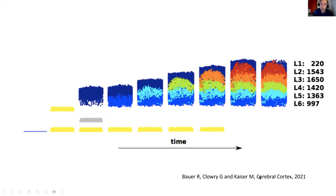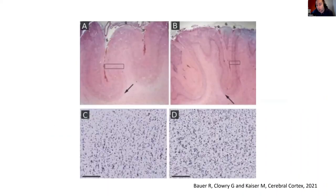In a study published two years ago, we looked into cortical development and created a computational agent-based model. We modeled each individual cell and how it behaves during cortical development, and we could reproduce realistic cell numbers in different cortical layers. From a biomedical point of view, we could also reproduce certain characteristics observed in polymicrogyria — a neurodevelopmental disease where the folding patterns are altered in comparison to healthy subjects.